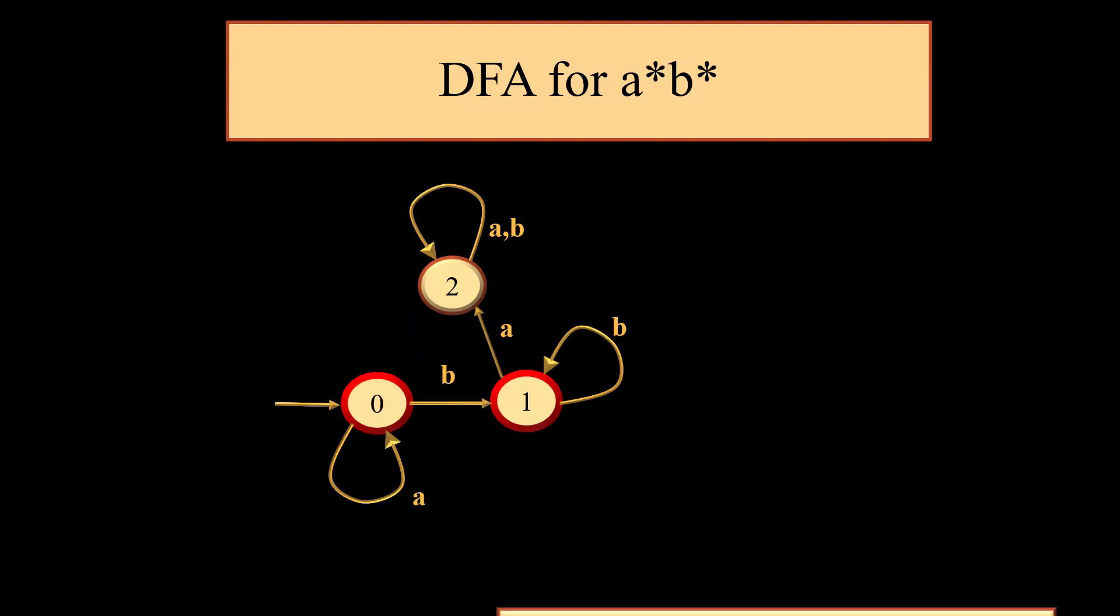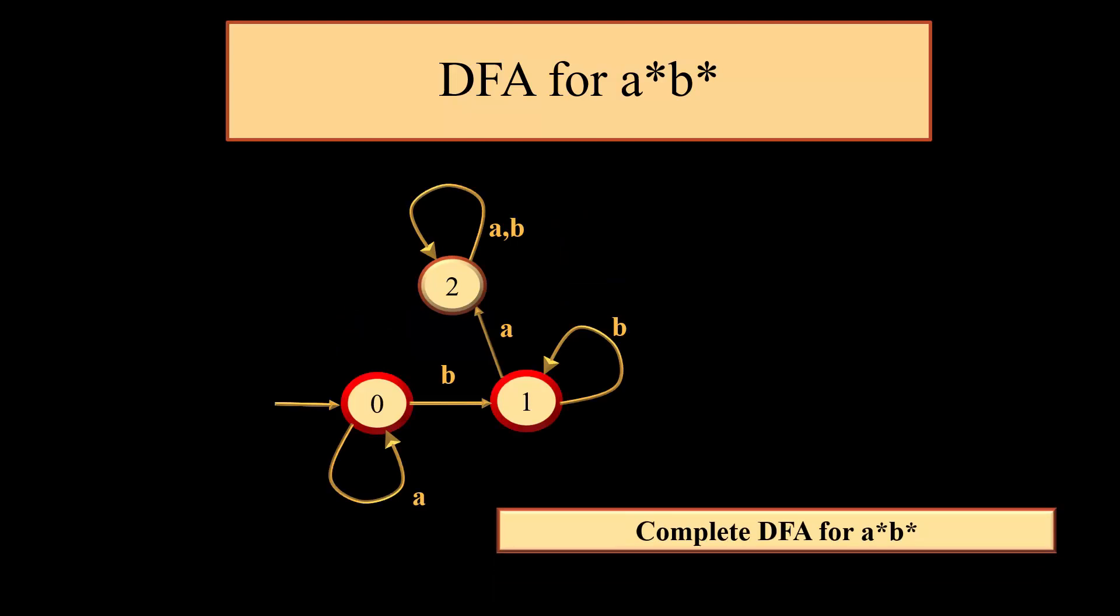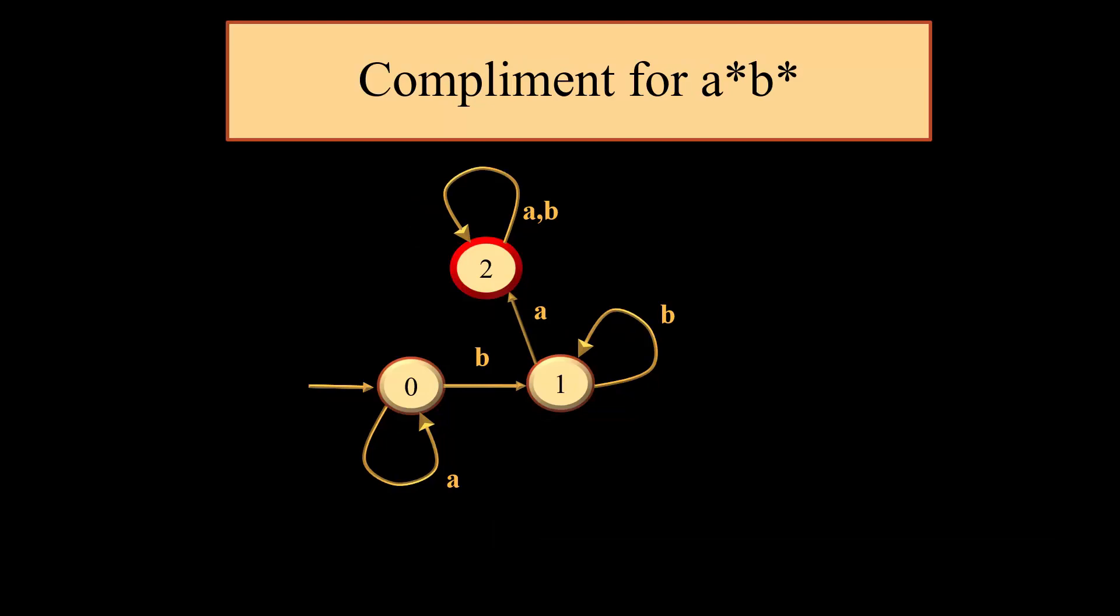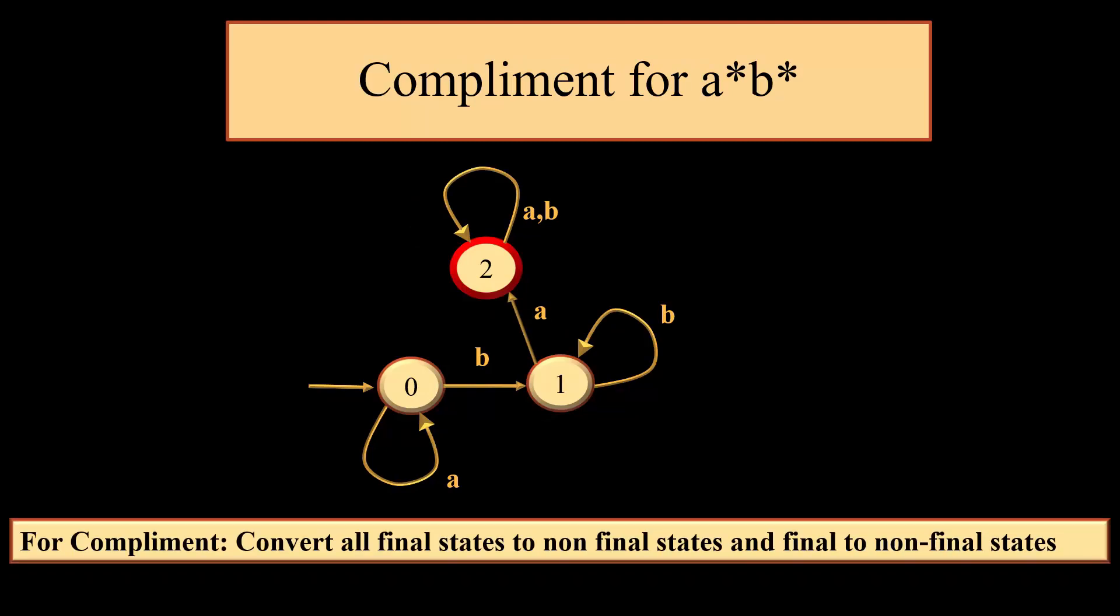So we will introduce one new state in order to complete the DFA. And we will have a move from 1 to 2 on A and have a self loop on AB. In order to find the complement, the only condition is that convert all non-final states into final states and all final states into non-final states. So this is the final output which we generate corresponding to the complement of A star B star.